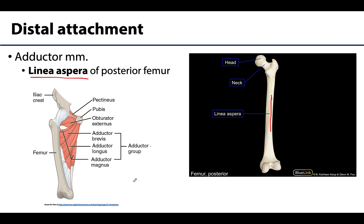Of note, the gracilis muscle additionally crosses the knee joint. Most of these muscles don't make it to the knee joint, but gracilis does and has an attachment on the tibia. However, gracilis is a relatively weak muscle, so it only provides synergistic actions at the knee.